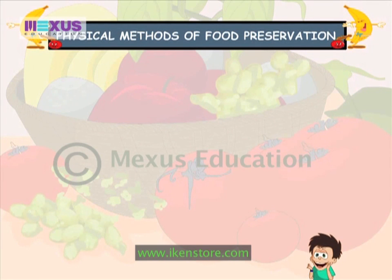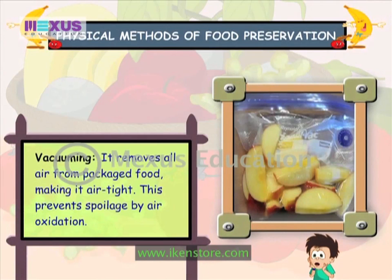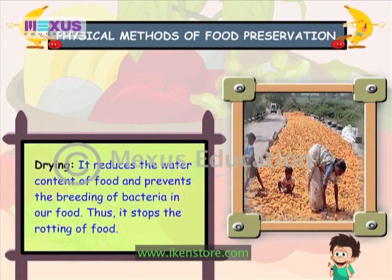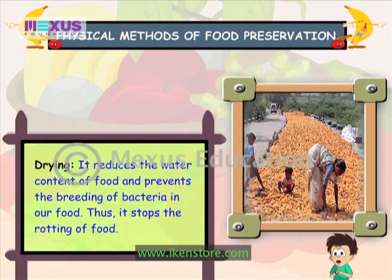Let's look at the physical methods. Vacuuming: it removes all air from packaged food making it airtight, which prevents spoilage by air oxidation. Freezing: it stops most chemical and biological processes that slowly spoil vegetables. Drying: it reduces the water content of food and prevents the breeding of bacteria in our food, thus stopping the rotting of food.